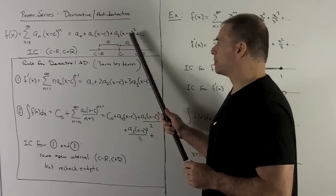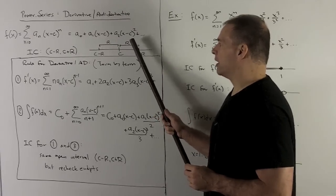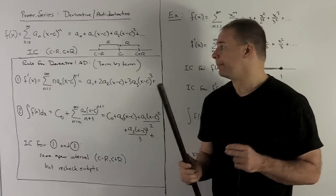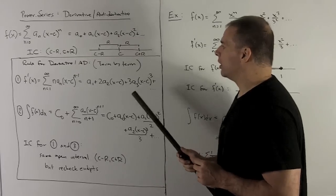For my a sub two x minus c squared, we're going to bring the two down, subtract one off the exponent, and then multiply by the derivative of the inside. The derivative of the inside is just one. So that's going to be two a sub two x minus c. In general, what are we going to do?